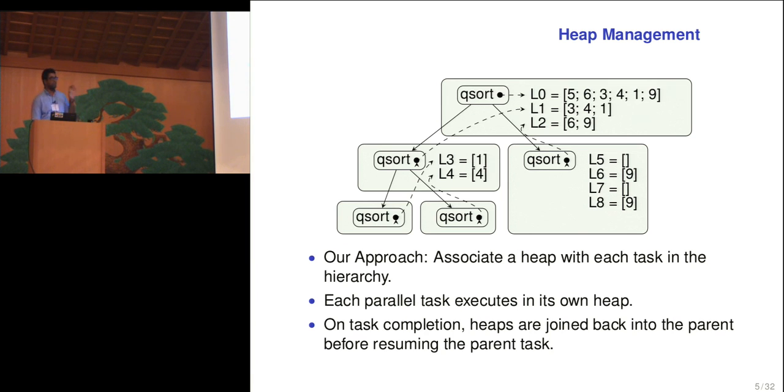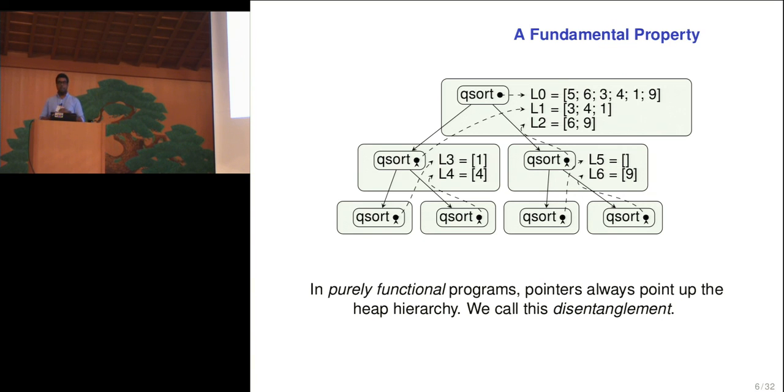Now I've talked about heap management so far. This is how we create these heaps, allocate memory, but we still need to collect them. And before I go into that, I want to illustrate a very fundamental property that enables really the rest of the paper. And that is this property that in pure programs, all the pointers essentially go up. No task can have access to data that was allocated by siblings or grand siblings. It can only go up its list of ancestors. We call this property disentanglement.